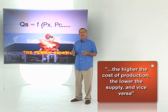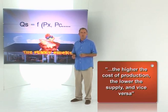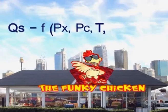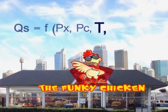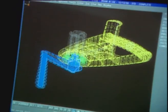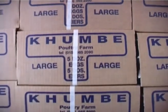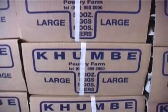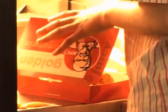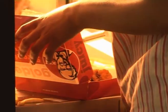The higher the cost of production, the lower the supply, and vice versa. Another important factor is technology. New technology — perhaps a fryer that uses less electricity, or new, cheaper packaging material — might make it possible to produce fried chicken at a lower cost, so we'll be able to supply more at the same selling price.